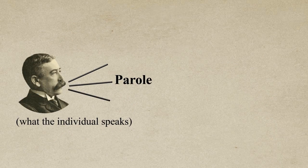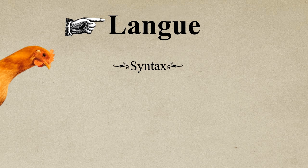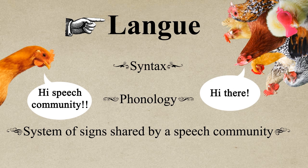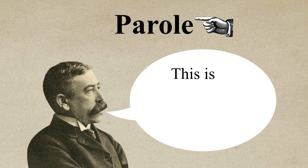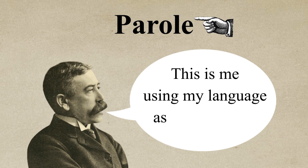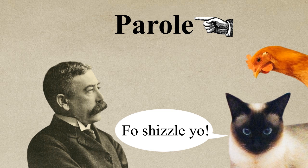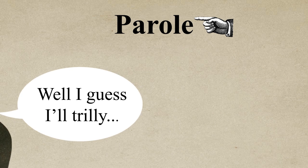Thirdly, Saussure distinguishes between the use of language, parole, and the system of language, langue. Langue, being the system of language such as syntax or phonology, is an abstract system. Parole, on the other hand, is the use of that language, and this is an individual matter. Have you noticed that people have their own language quirks? Well, this is the individual side — the actual use of language.